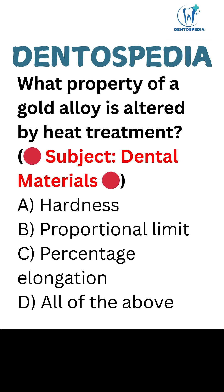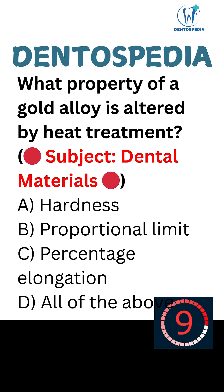What property of a gold alloy is altered by heat treatment? Option A: Hardness. Option B: Proportional limit. Option C: Percentage elongation. Option D: All of these are correct.